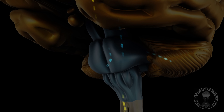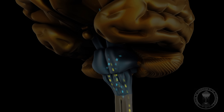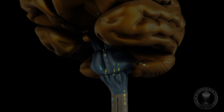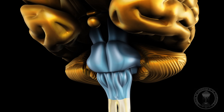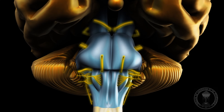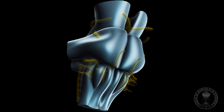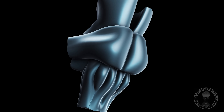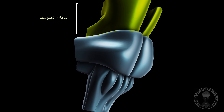يشكل جدع الدماغ ممراً رئيسياً للإشارات الحركية والحسية، كما يضم مراكز للسيطرة على الألم. تنبع معظم الأعصاب القحفية من جدع الدماغ. ينقسم جدع الدماغ إلى ثلاثة أجزاء: الدماغ المتوسط، الجسر، والنخاع المستطيل.